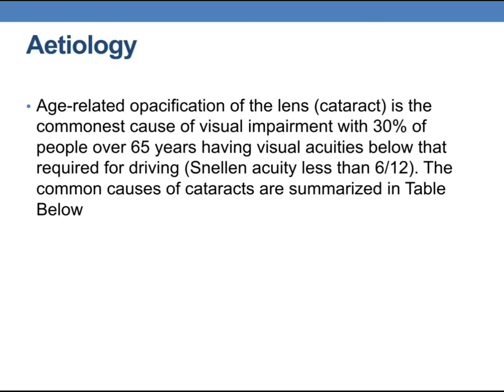Etiology. Age-related opacification of the lens is the commonest cause of visual impairment, with 30% of people over 65 years having visual acuities below that required for driving — a Snellen acuity of less than 6/12.